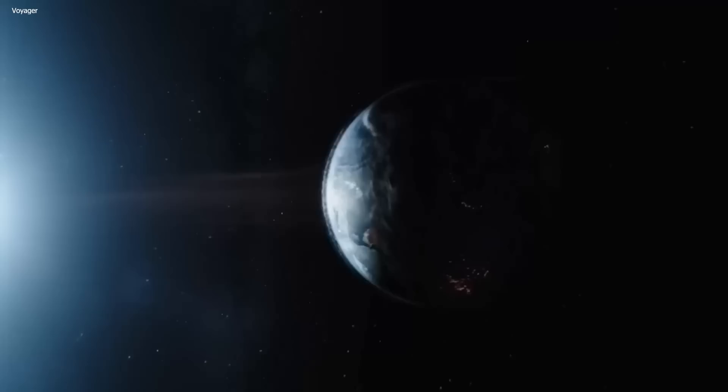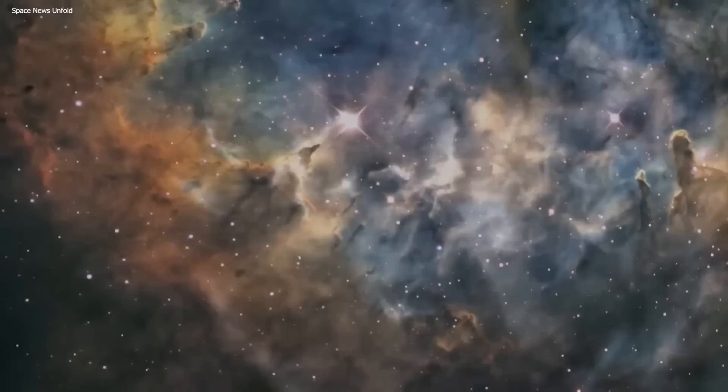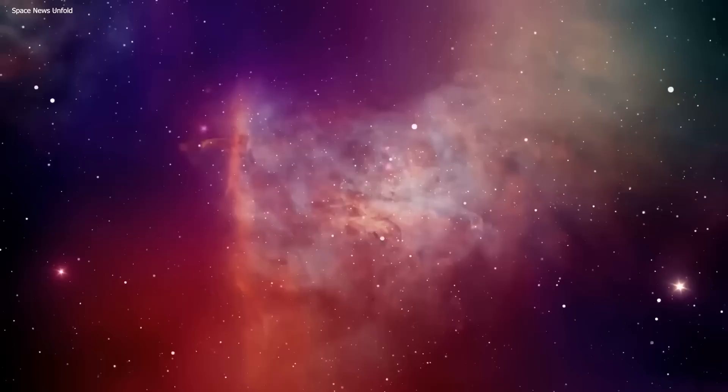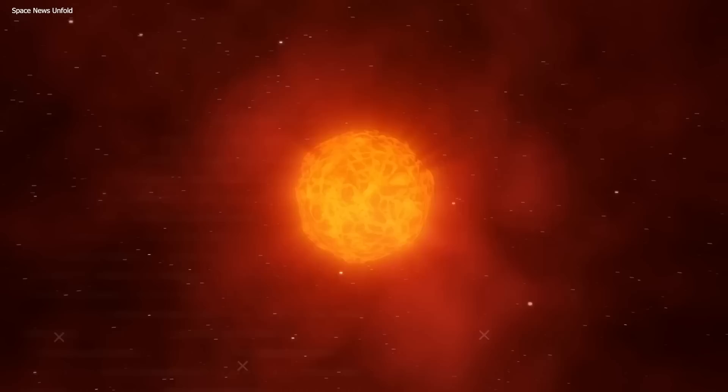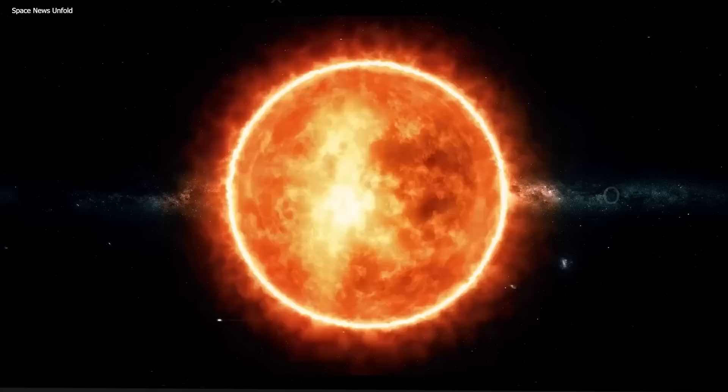The presence of star spots is not unique to Betelgeuse. Many stars, including our own sun, have them. However, the star spots on Betelgeuse are particularly interesting because they are much larger and more numerous than those on the sun. The spots on Betelgeuse can be several times the size of Earth and cover up to 20% of the star's surface. The presence of star spots can also affect a star's brightness and cause it to vary over time. This is because the spots are cooler and therefore emit less light than the surrounding gas. As the star rotates, the spots move in and out of view, causing the overall brightness of the star to fluctuate.